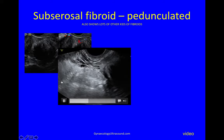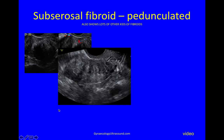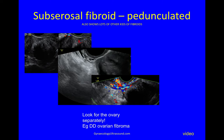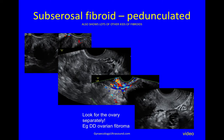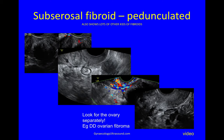This is a pedunculated subserosal fibroid — you can see the pedicle connecting the fibroid and the uterus, with all the other kinds of fibroids too and the endometrial cavity much distorted. If you put colour Doppler on the pedicle you can see that there's good flow, which proves it's a pedunculated fibroid, but you still need to show the ovaries separately to make sure it's not an ovarian fibroma. The ovary can be found much lower than expected but entirely separate from the adnexal mass.